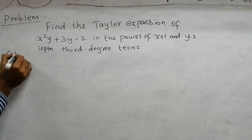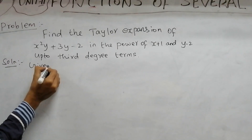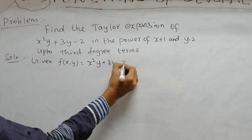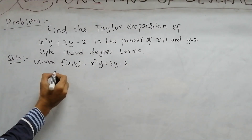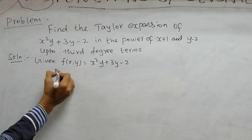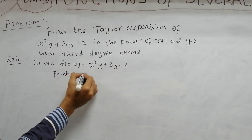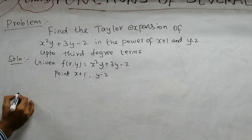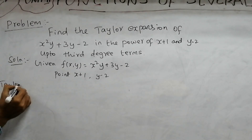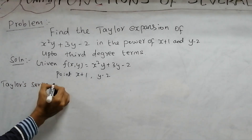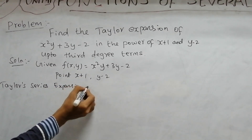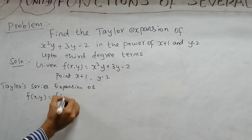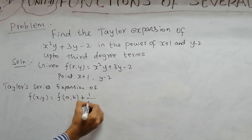Problem number 2. The solution: the function f(x,y) equals x squared y plus 3y minus 2. We expand in powers of (x plus 1) and (y minus 2) up to the third degree. We will find out the Taylor Series expansion formula.